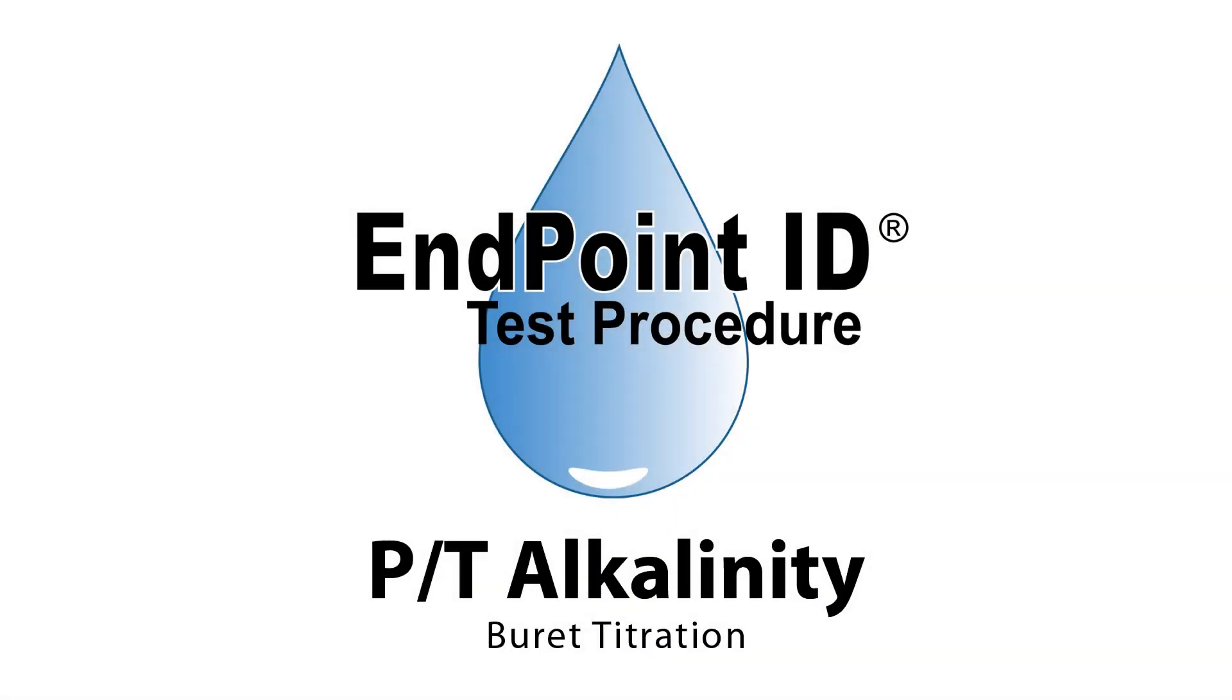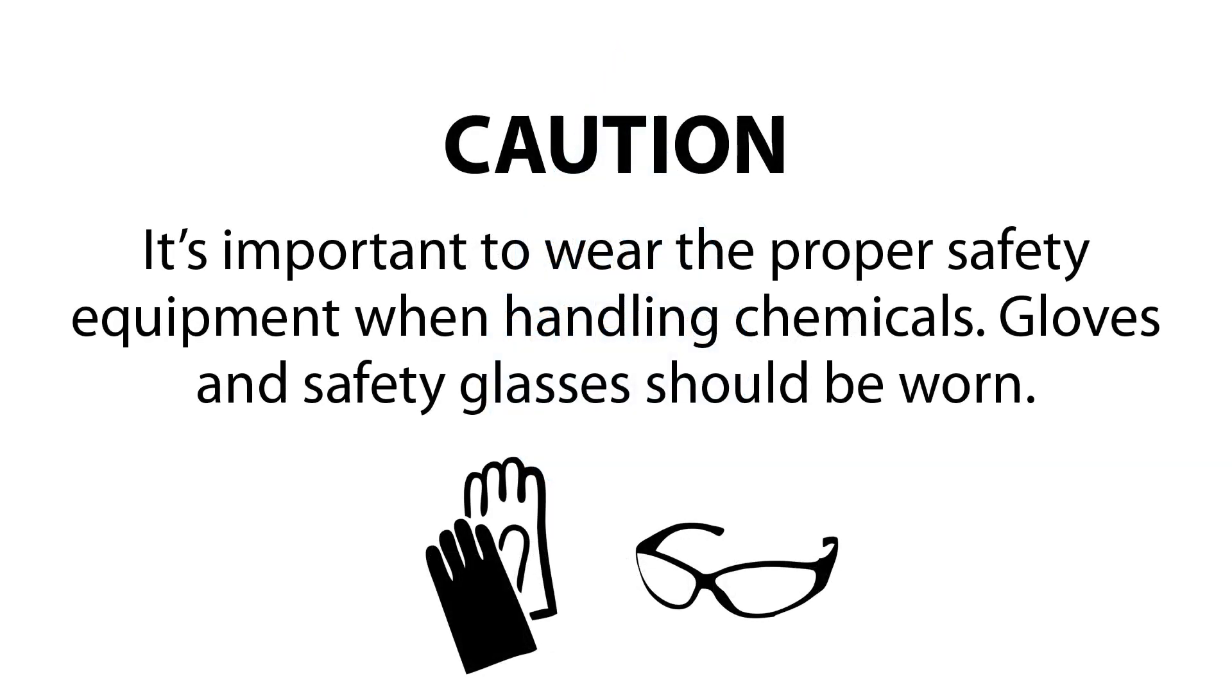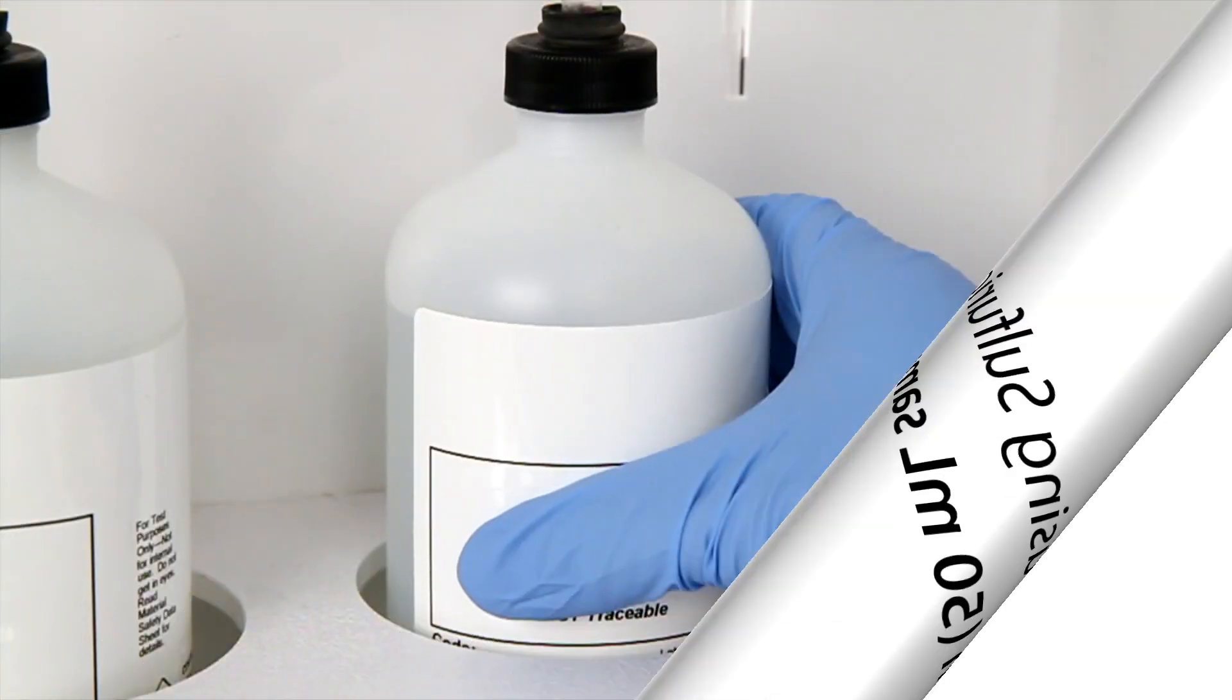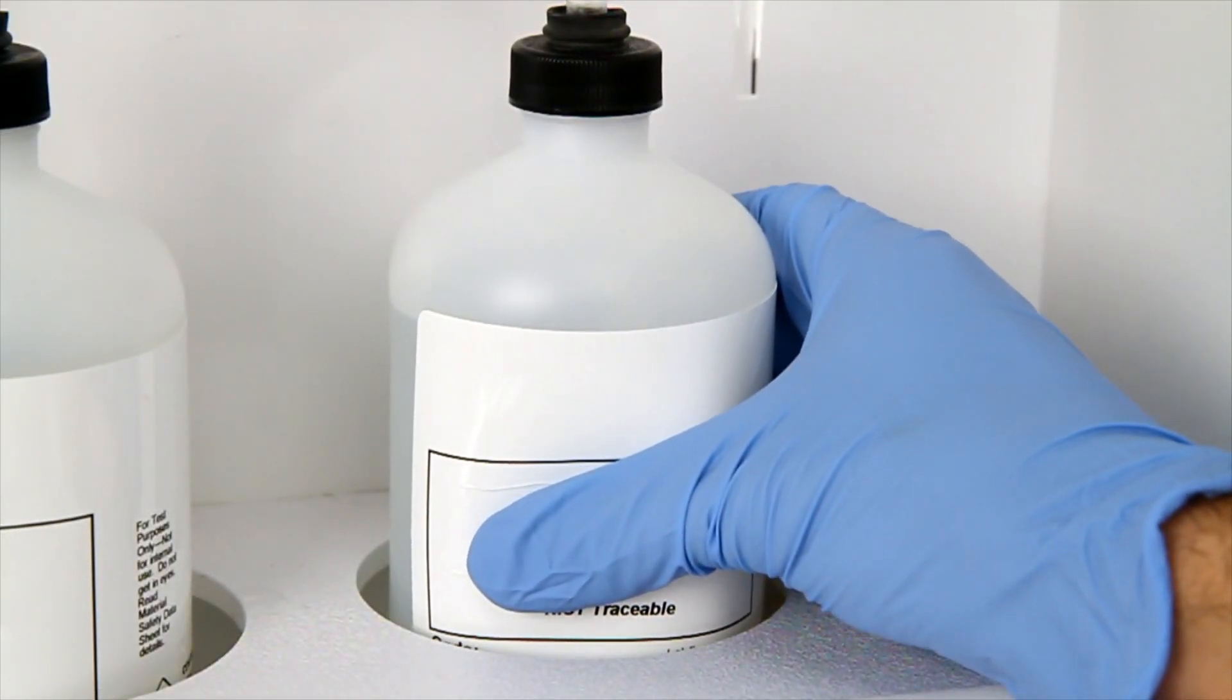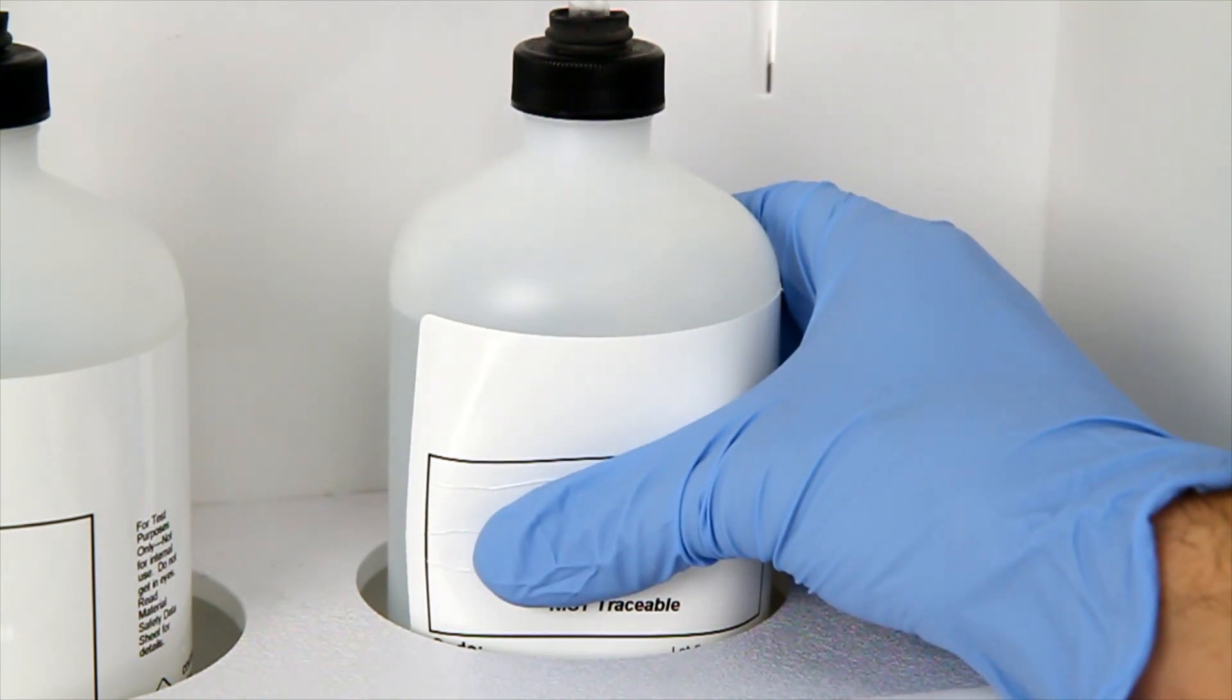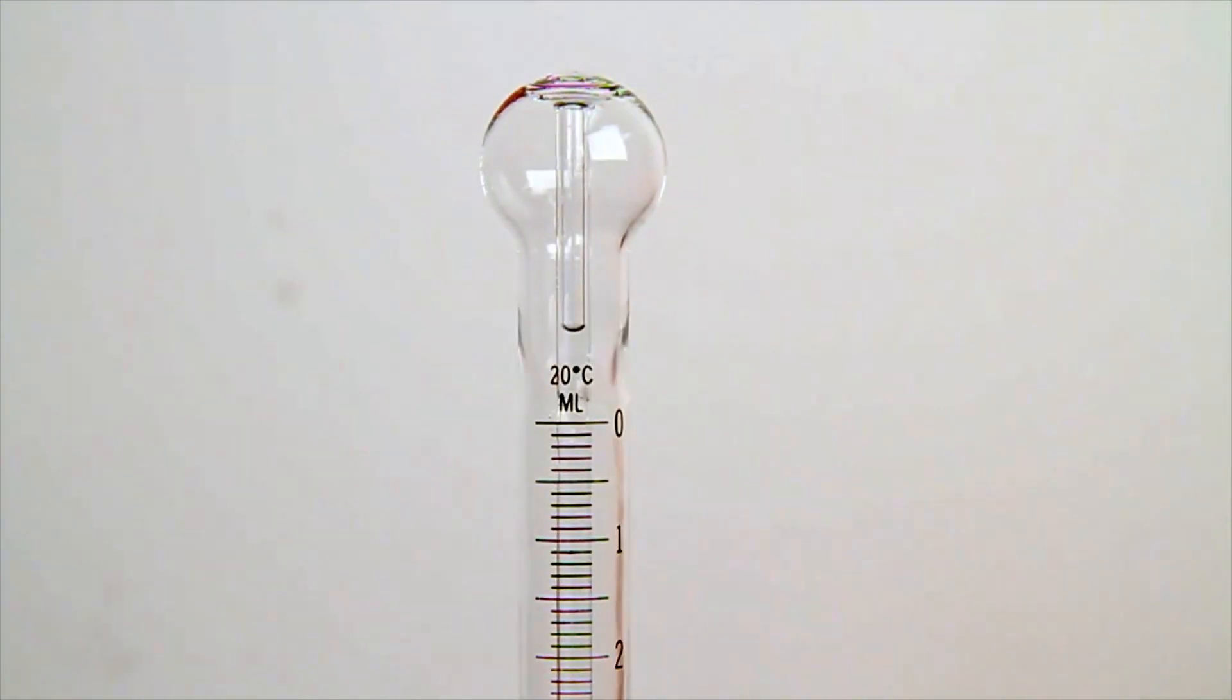This is a demonstration of a PNT alkalinity burette titration. The first step is to fill and zero the burette with sulfuric acid titrant. Zero the burette by squeezing the bottle until the titrant reaches the zero mark.